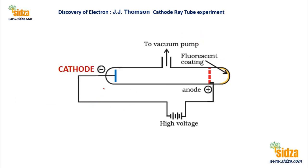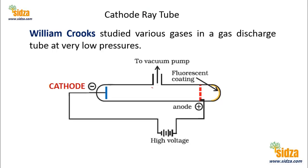Let's see how J.J. Thomson found that the atom contains small particles called electrons. J.J. Thomson conducted cathode ray tube experiments, and from these experiments he found that the atom contains an electron — a negatively charged particle present in matter. These cathode ray tube experiments were initially started by William Crookes, who studied various gases in a discharge tube at very low pressure. But it was J.J. Thomson who continued these experiments and made certain modifications in the discharge tube experiment.